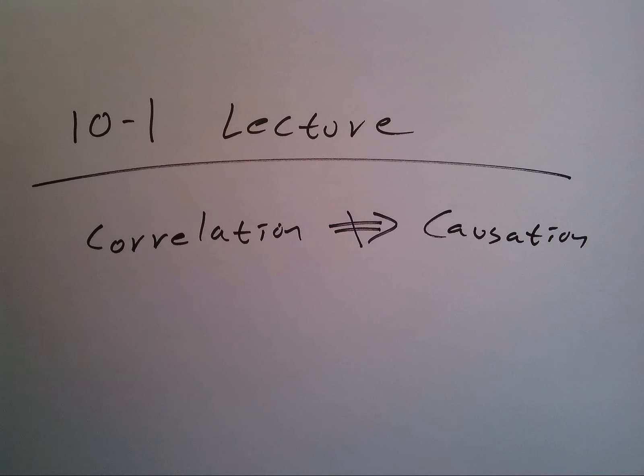10.1 lecture: correlation does not imply causation. What that means is just because things are very linearly correlated does not mean that one causes the other. One of my favorite examples of this is when you look at cities...